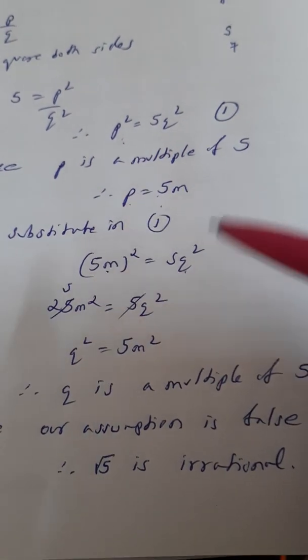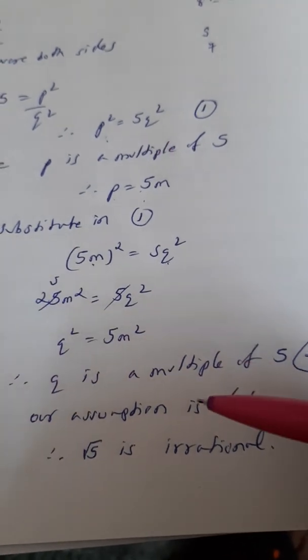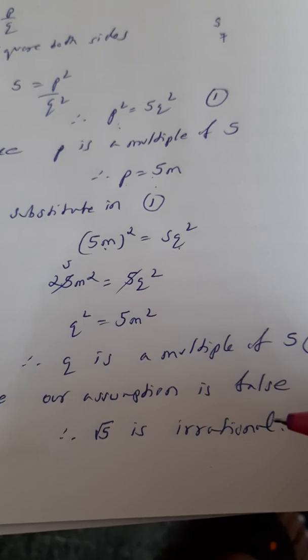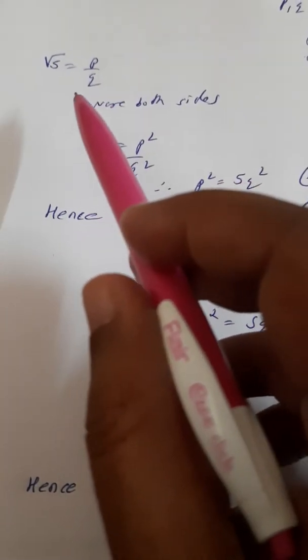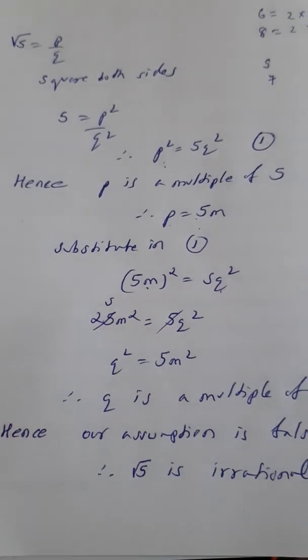But here we are finding that the common factor is 5, because p is a multiple of 5, q is also a multiple of 5. So there is a common factor of 5. So our assumption is false, and therefore we can say root 5 is irrational. So this is an important question. In the exam any number can be given, so you need to practice this once on your own and also please try the solved examples.